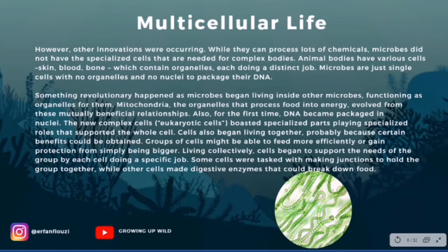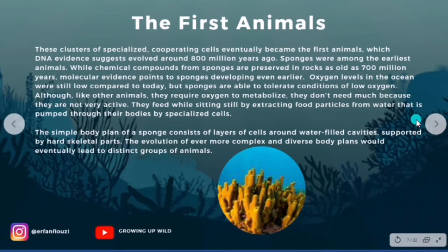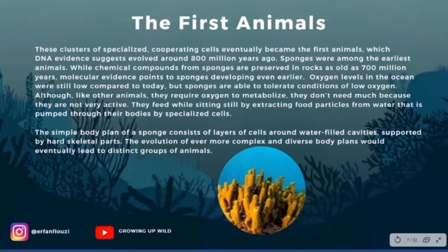Animals having a left and a right side that are mirrored images of each other appeared by 555 million years ago. These clusters of eukaryotic, cooperating cells eventually became the first animals, which DNA evidence suggests evolved around 800 million years ago. Sponges were among the earliest animals, and we can still see them today. While chemical compounds from sponges are preserved in rocks as old as 700 million years ago, molecular evidence points to sponges developing even earlier.